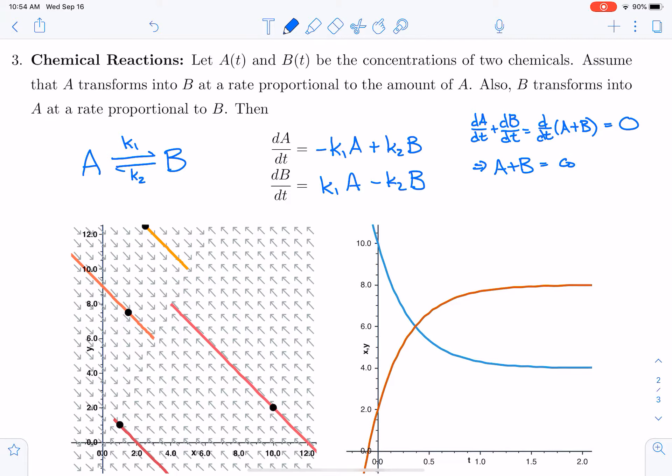If we give initial conditions, that constant would have to be A0 plus B0—how much we started with with chemical A and how much we started with with chemical B. And so this is actually an expression of conservation of mass, that matter is not created or destroyed.